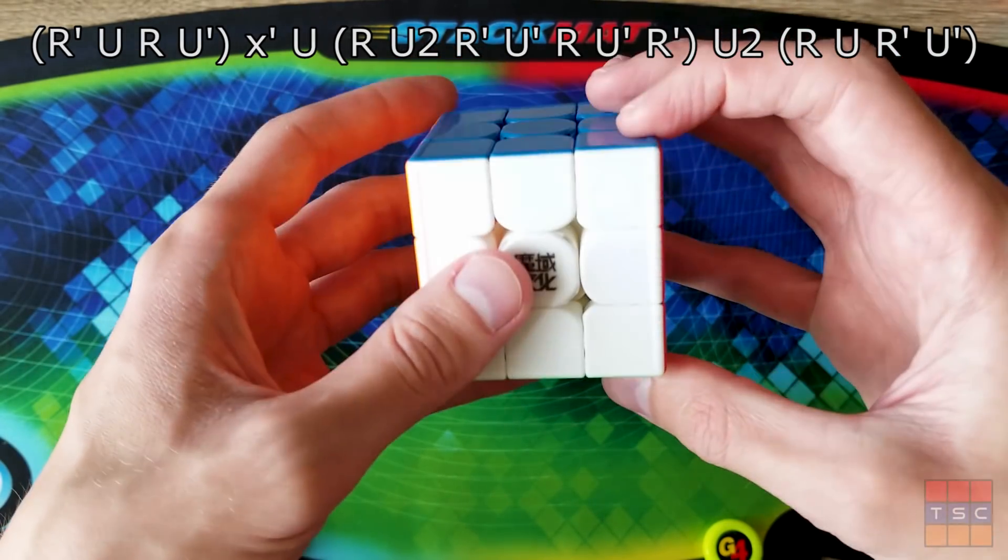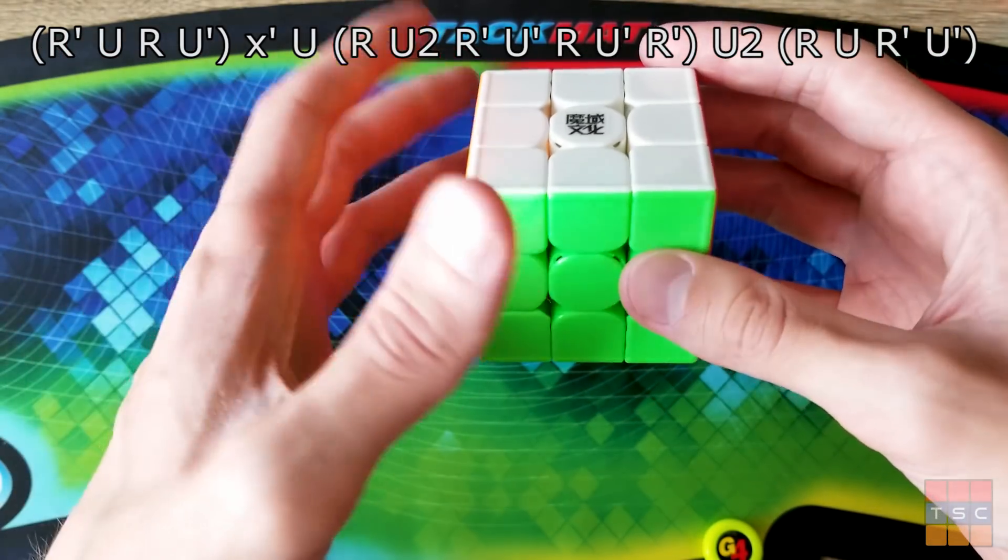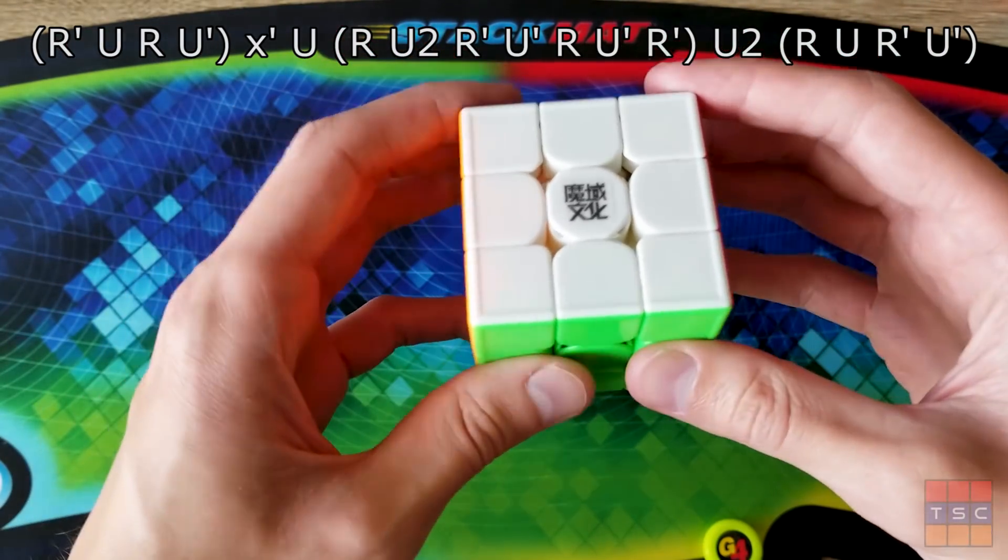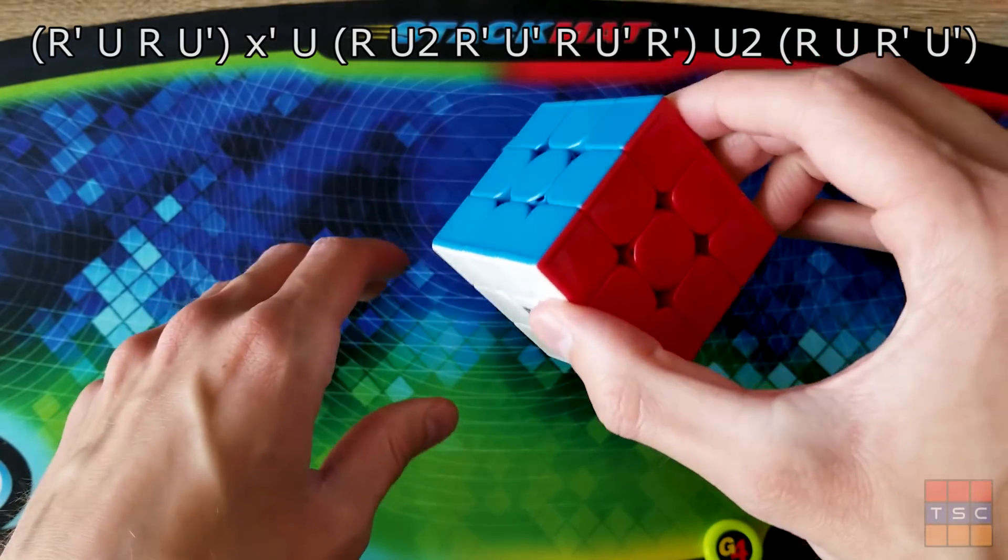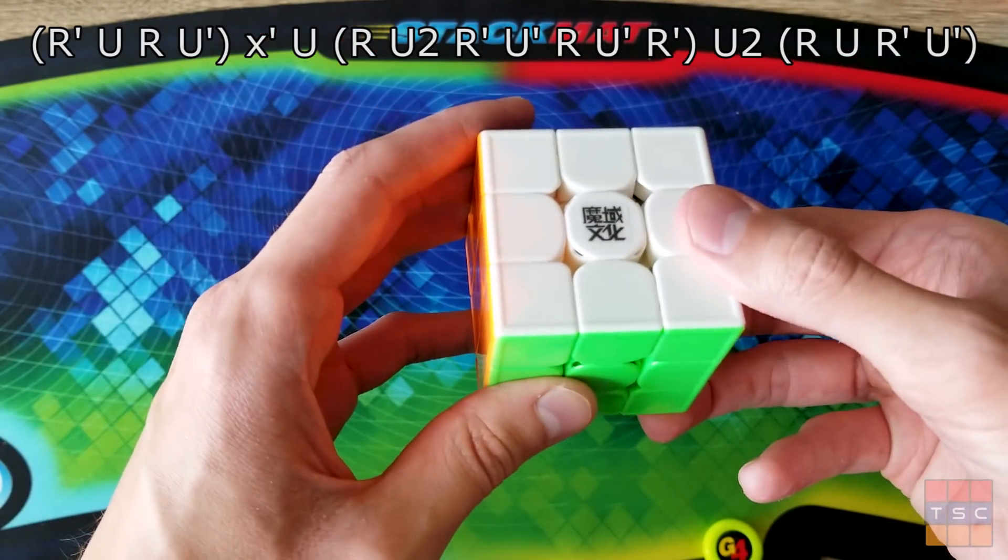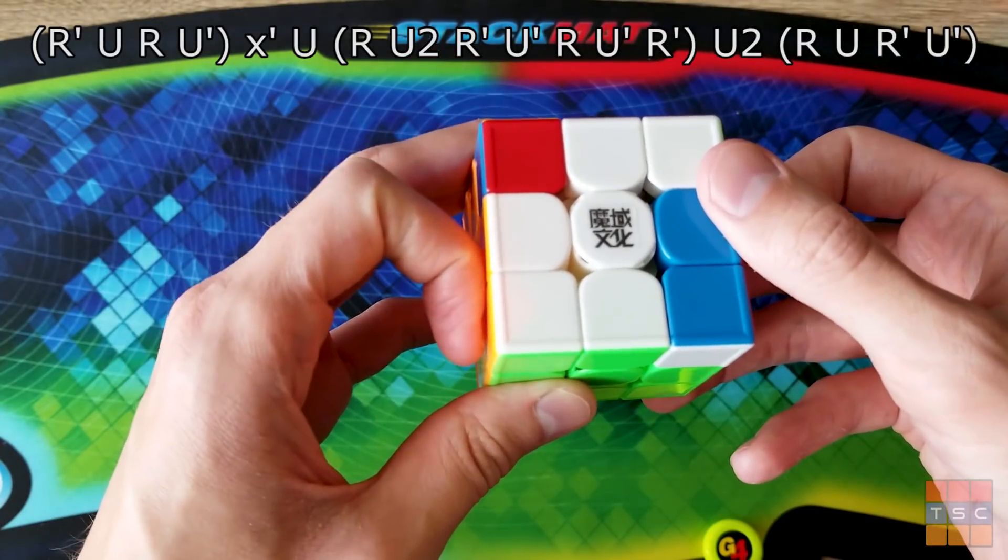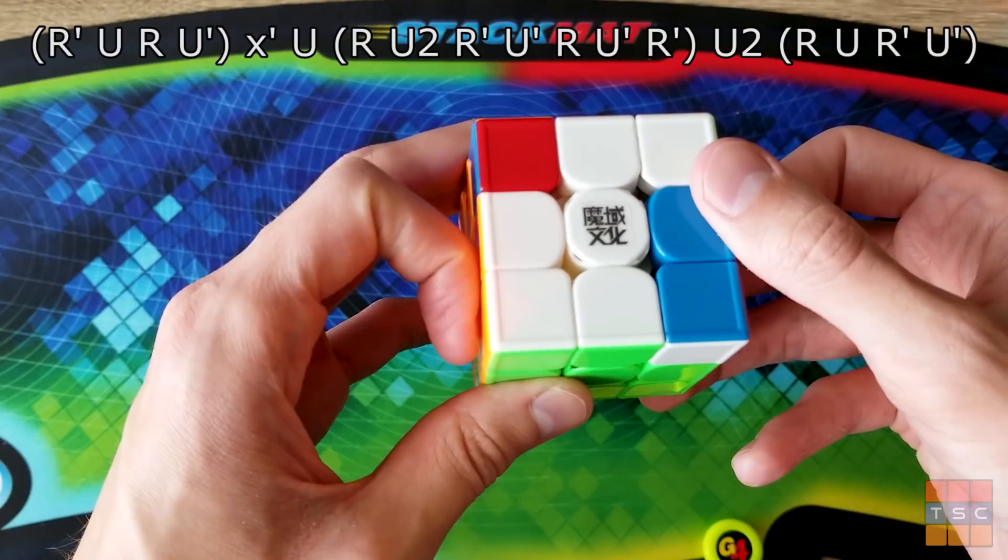Instead all you have to do is one little tiny X rotation. But because of the way you put your hands, it's actually really easy. The way I finger trick this is start by re-gripping your hand like this, so your fingers are on the bottom and your thumb's on the top. This makes it really easy to do the R' U R U'.